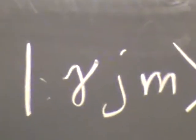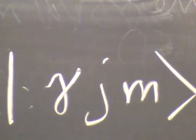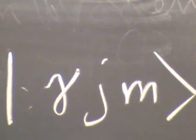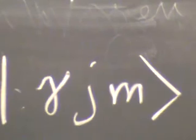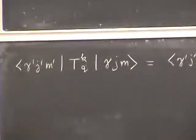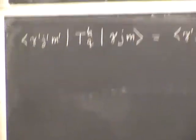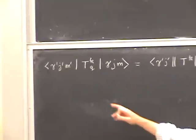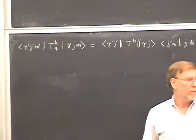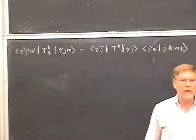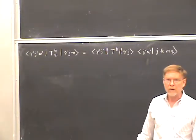I'm going to begin today just by reviewing for you the content of the Wigner-Eckhart theorem. The Wigner-Eckhart theorem concerns the matrix elements of irreducible tensor operators T_KQ between two basis vectors of the standard angular momentum basis, gamma-prime J-prime M-prime on one side and the other on the other side.